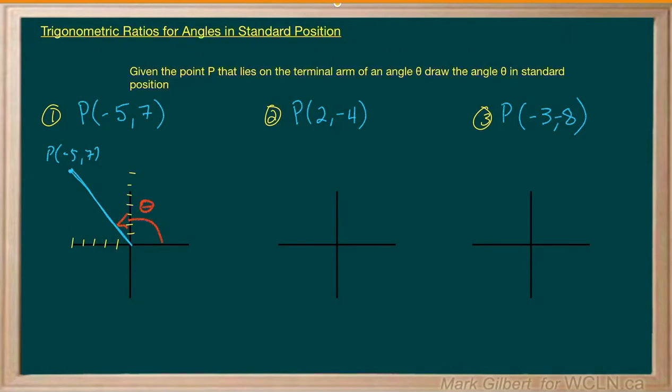Let's try the next one: 2, 1, 2, negative 4, 1, 2, 3, 4. There we go. So again, here's my point P, and there's the angle theta in standard position.